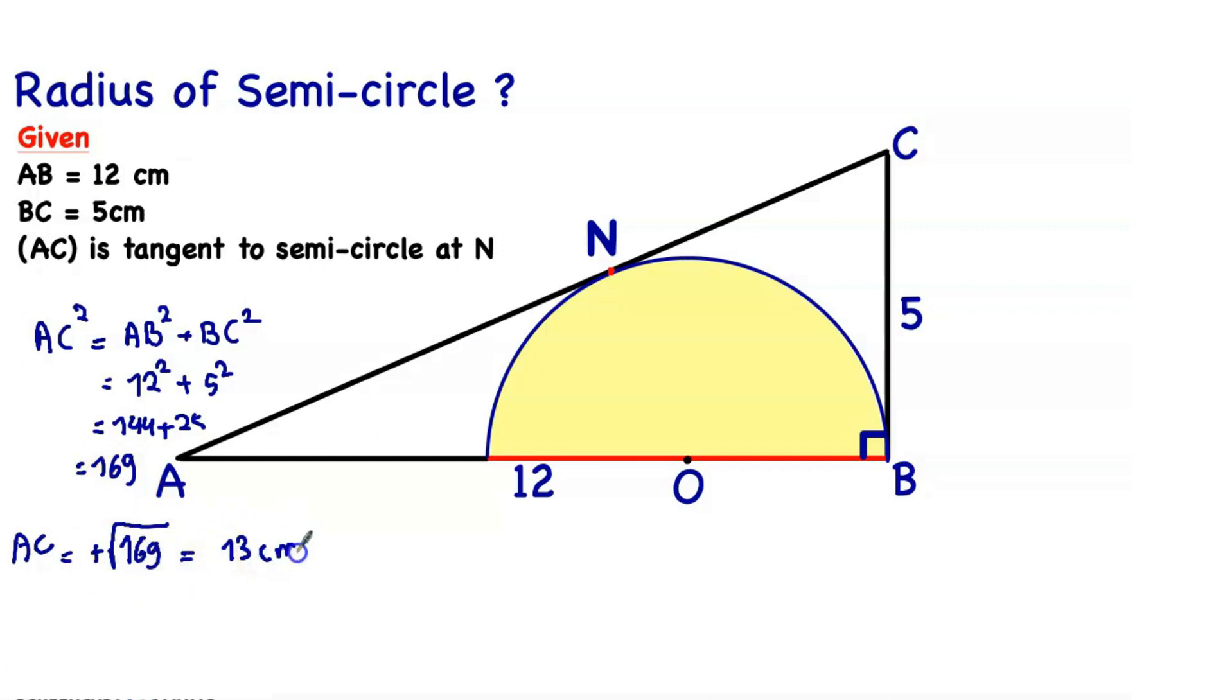Now let's connect the two points O and N. Given that AC is tangent to the semicircle at N, we have a 90-degree angle by definition. The tangent is the line that makes a 90-degree angle with the radius. OB is the radius, and here we have a 90-degree angle, so BC is also a tangent. In this figure we have two tangents.